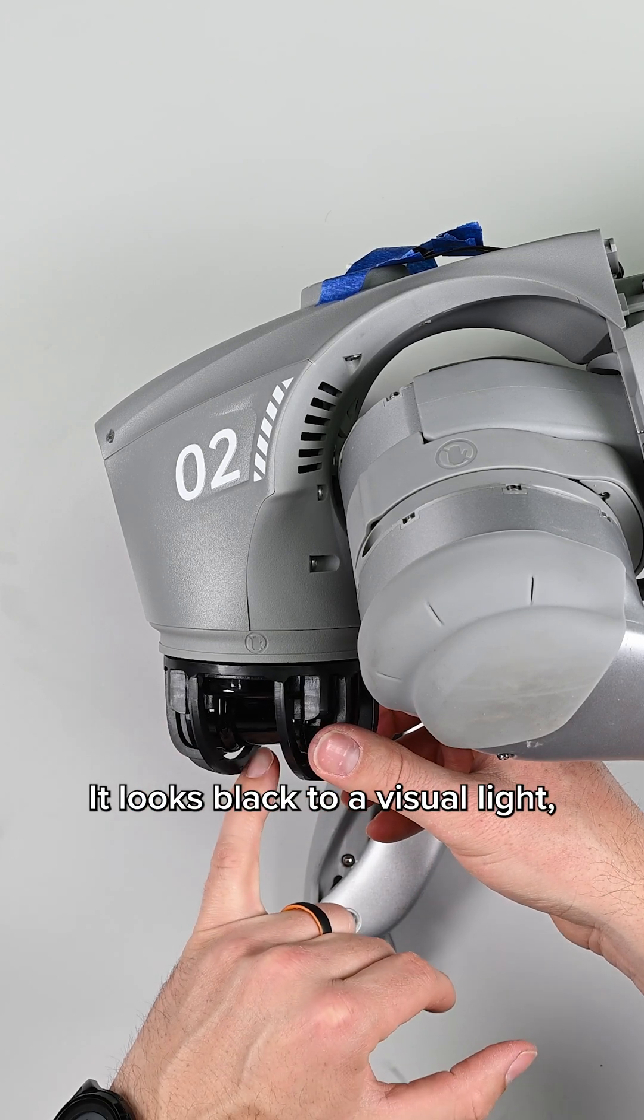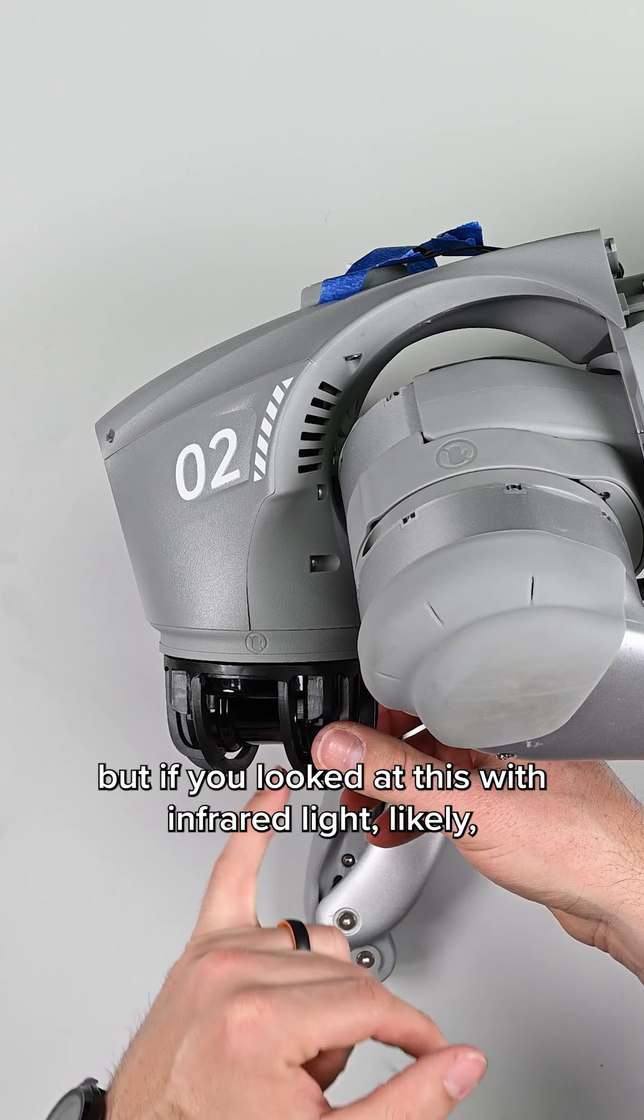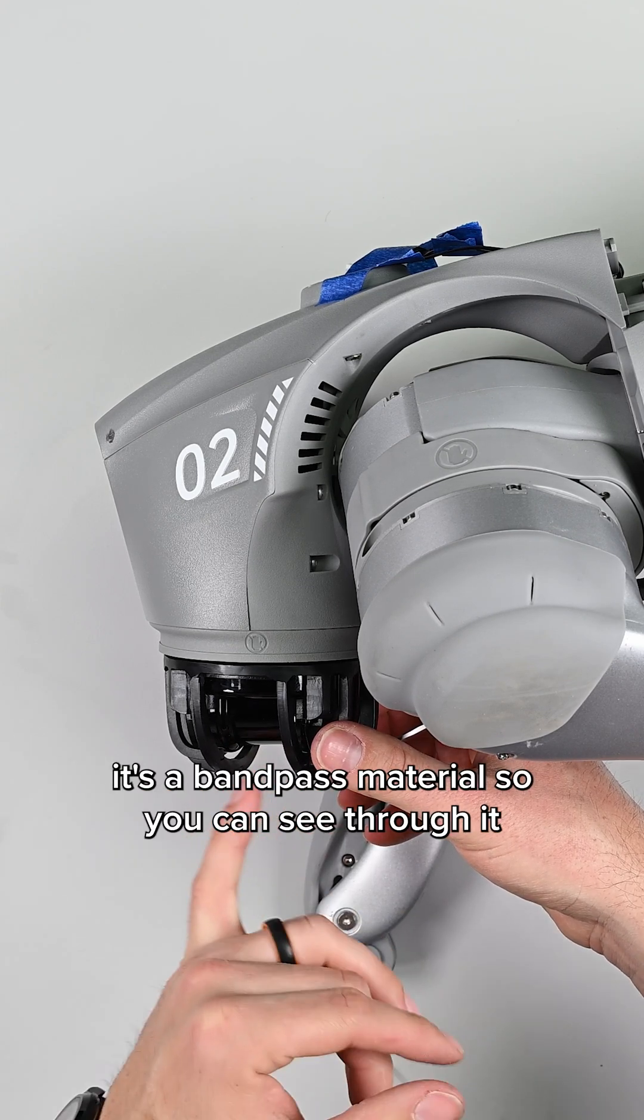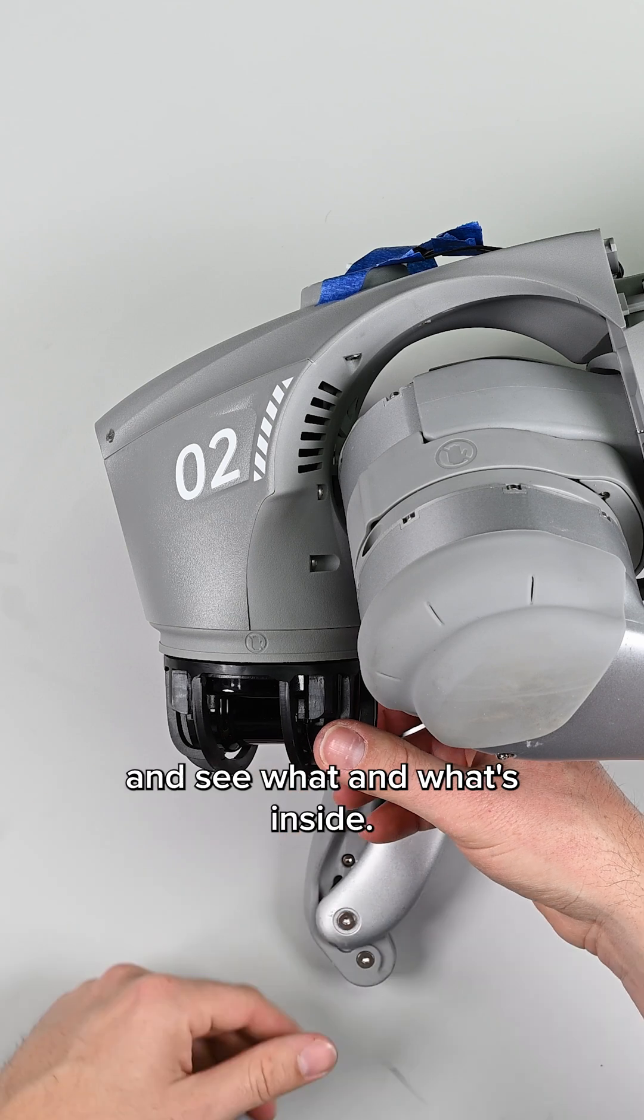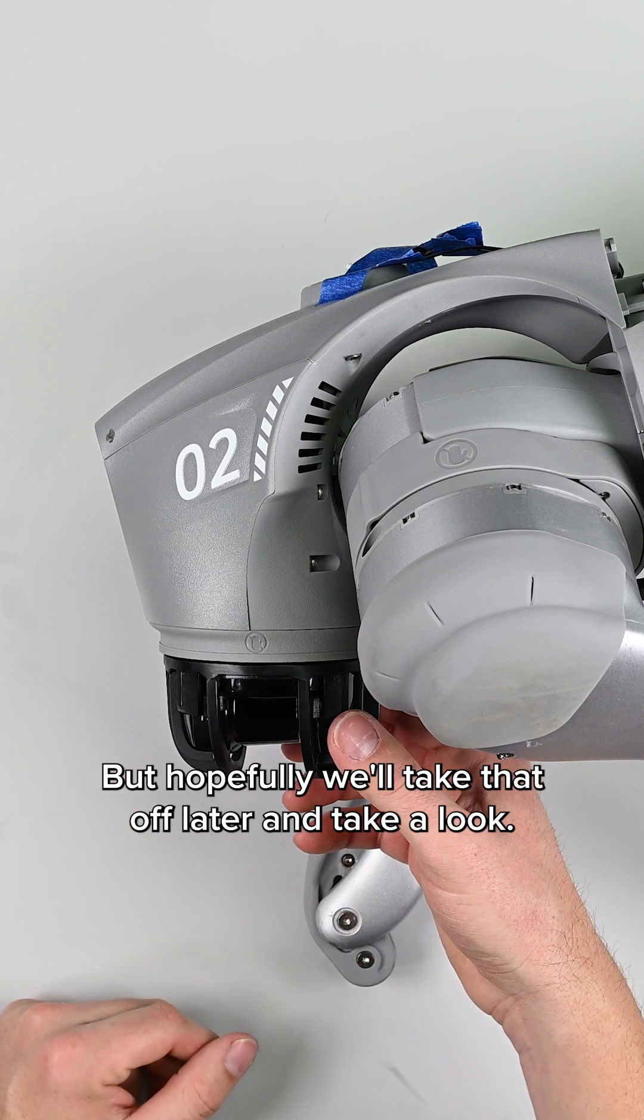It looks black to visual light, but if you looked at this with infrared light, likely it's a bandpass material so you can see through it and see what's inside. But hopefully we'll take that off later and take a look.